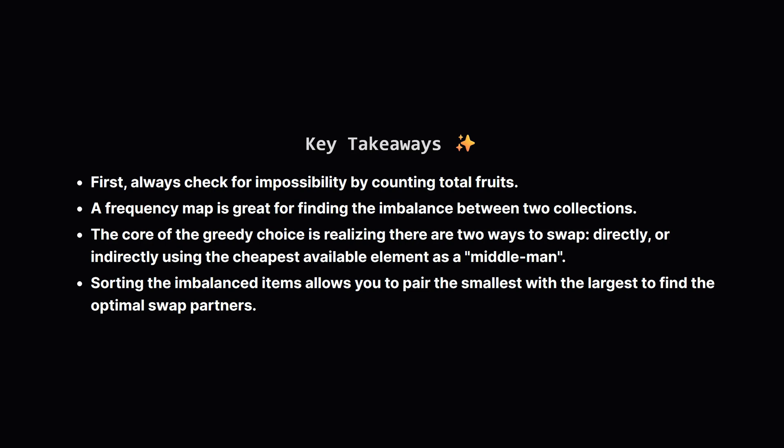So to wrap it all up, what are the big ideas here? First, always look for an impossible state, which in this case was an odd total count for any fruit. Second, using a frequency map is a super clean way to find the difference between two collections. The real aha moment is realizing that for any swap, you have a choice, a direct swap, or a cheaper indirect one using the global minimum. By sorting the fruits that need to be moved, we can greedily pair them up to find the minimum total cost.